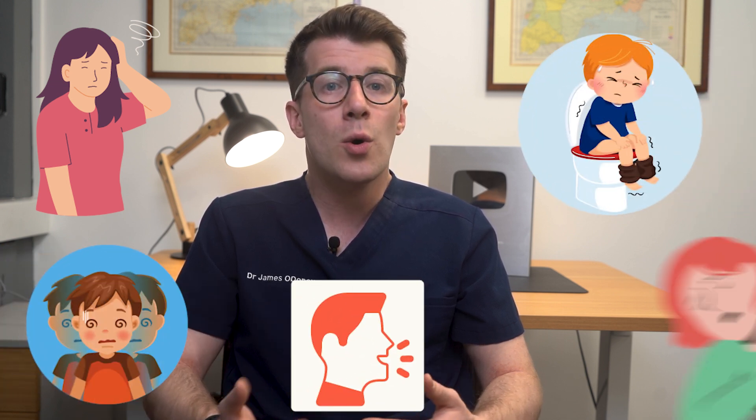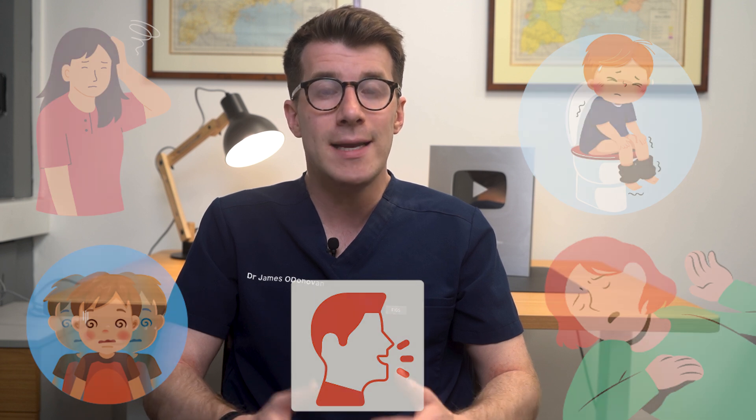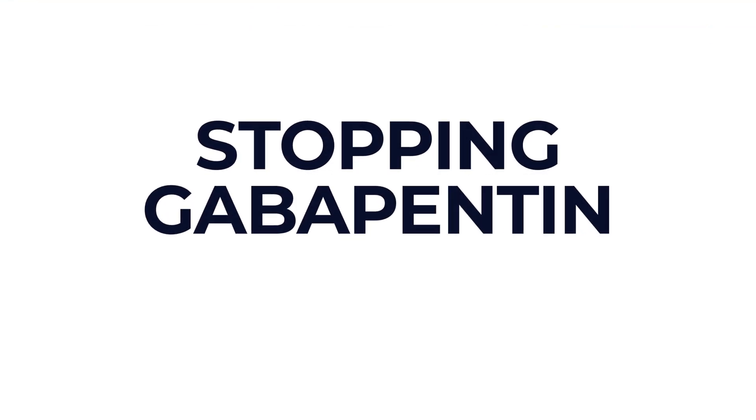Taking too much Gabapentin can cause unpleasant side effects and you should seek urgent medical advice if you've taken more than your prescribed dose and you feel very dizzy or sleepy, you've got double vision, you start slurring your words, you have diarrhea, or if you faint or pass out. If you need to go to the emergency department, take the Gabapentin packet or leaflet along with any remaining medication.